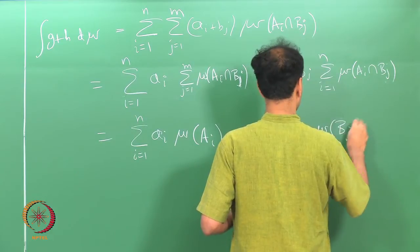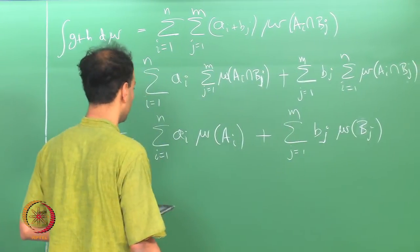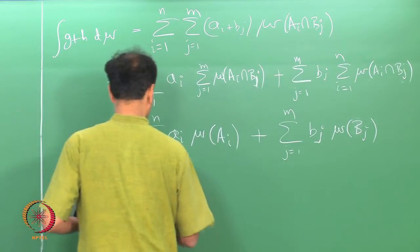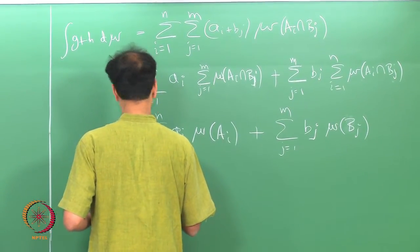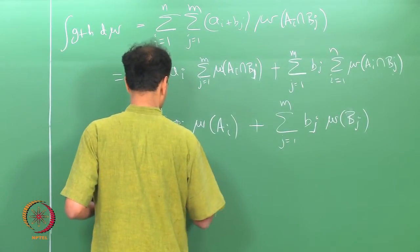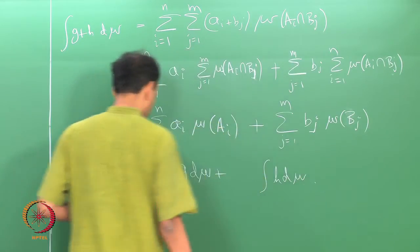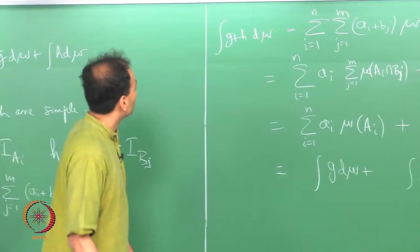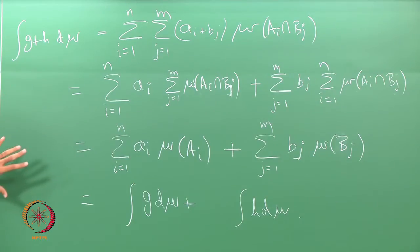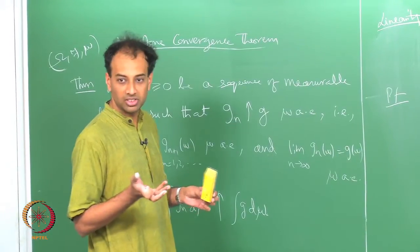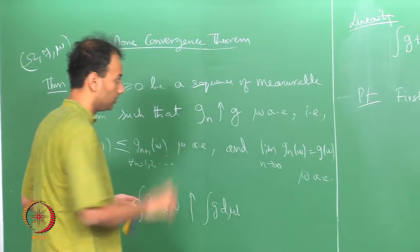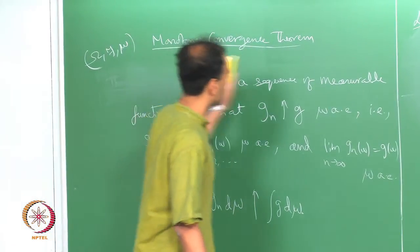That is nothing but the integral of g plus the integral of h d_mu. So proving linearity for simple functions is quite elementary. Now you have to prove it for arbitrary non-negative measurable functions.